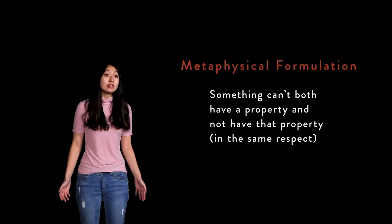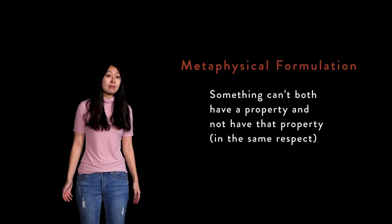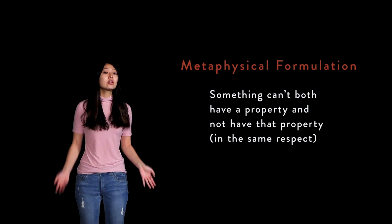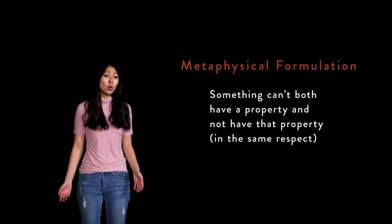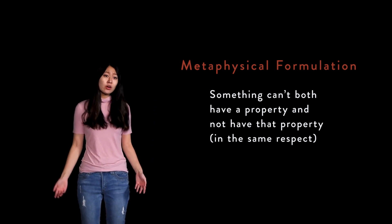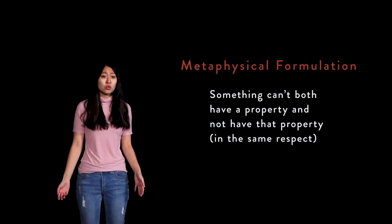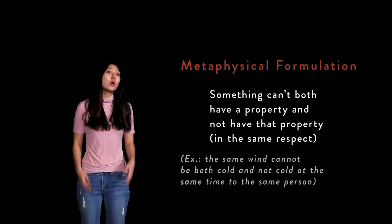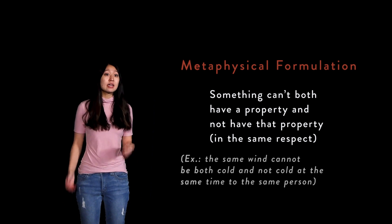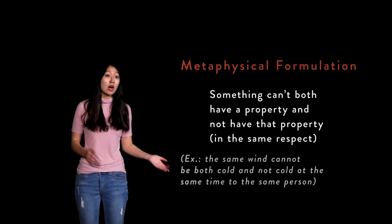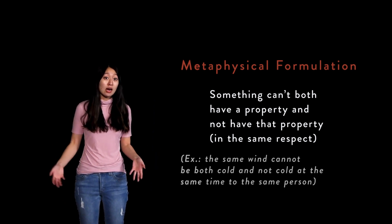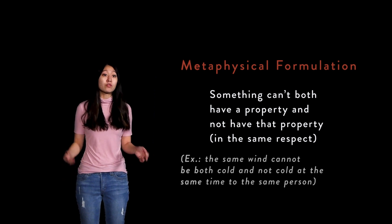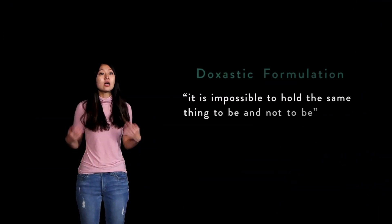This stipulation is necessary insofar as a property might apply under some conditions but not others. For example, the same blizzard wind can be cold for Noah and not cold for Jane, or the same blizzard wind can be cold for Noah now but not cold for Noah an hour ago. When we specify that the same wind cannot be cold and not cold for the same person or at the same time, then we say the wind cannot both be cold and not cold for Noah now.